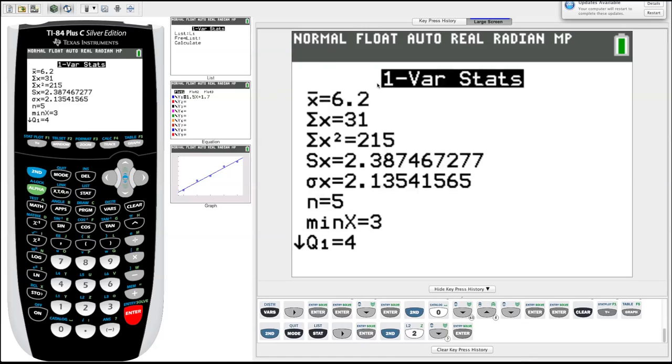All right. So a whole bunch of things pop up. X bar, which we know to be our average or our mean. Our X bar is 6.2. Sum of X, this means summation of X. That's just all the data in that column added up. Summation of X squared is just all that data squared and then added up. And then some important bits here. SX is our sample standard deviation. And sigma X, lowercase sigma, the Greek sigma, is our population standard deviation.